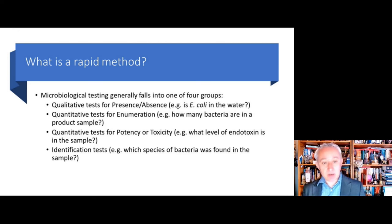Generally, rapid methods can be divided into core groups. We have qualitative tests for presence or absence, such as a rapid microbiological method for instant detection of whether we've got coliforms in a given sample of water or E. coli specifically. Quantitative tests for enumeration—how many bacteria are in a product sample, for example. Quantitative tests for potency, such as classic endotoxin testing or some of the newer ELISA-based endotoxin detection methods. Or it could be an identification test: what is the species of bacteria found in that sample, and how quickly and accurately can a result be given.